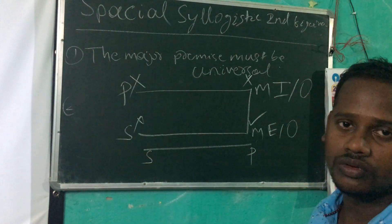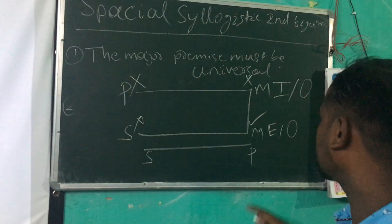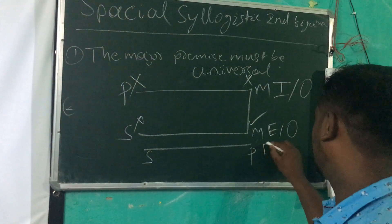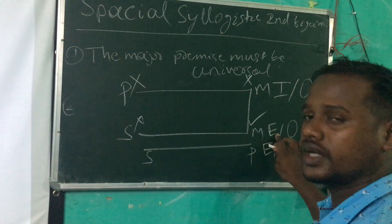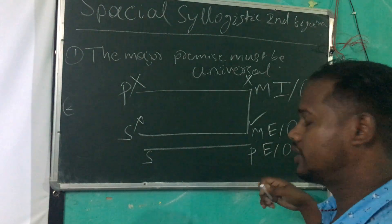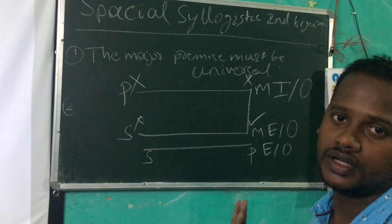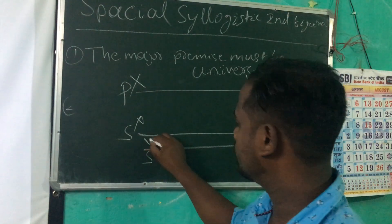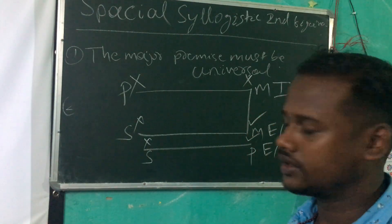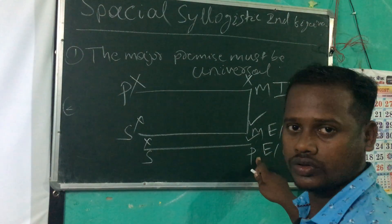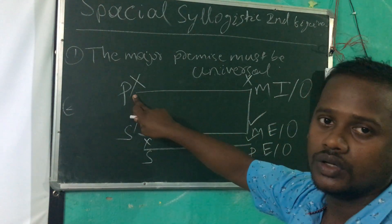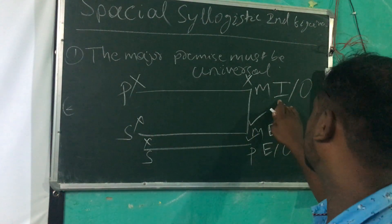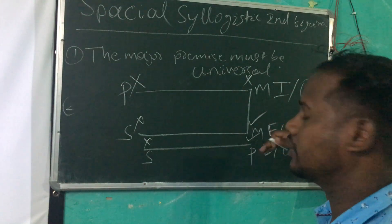If one premise is negative, then the conclusion must be negative, according to rule 6. If the conclusion is negative, it distributes the predicate term — which is the major term — but the major term is undistributed in the major premise. So we commit the fallacy of illicit major. Therefore, the major premise cannot be particular; it must be universal.